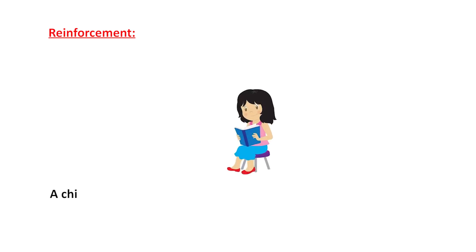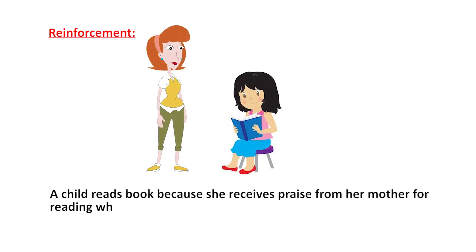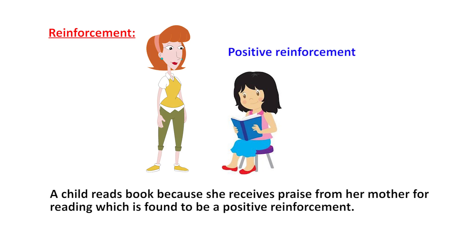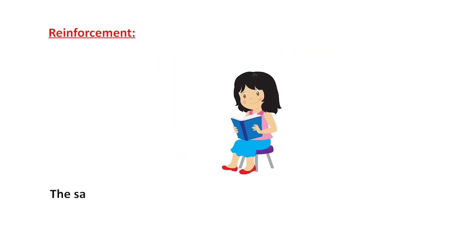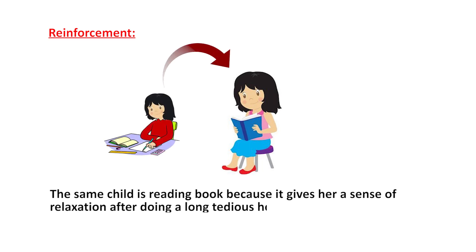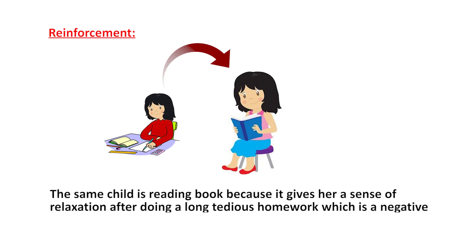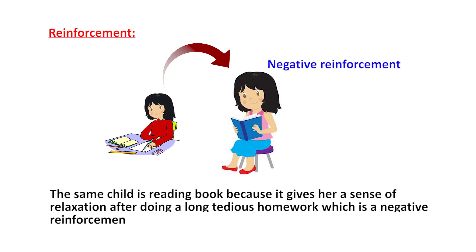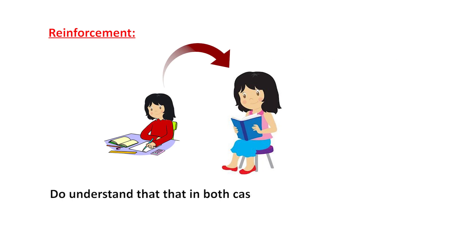An example of reinforcement: a child reads a book because she receives praise from her mother for reading — this is positive reinforcement. The same child reads a book because it gives her a sense of relaxation after doing long, tedious homework — this is negative reinforcement. In both cases, the end result is a higher incidence of book reading. Positive reinforcement increases the frequency of a behavior when followed by a pleasant stimulus, while negative reinforcement increases behavior through the removal of an aversive stimulus.